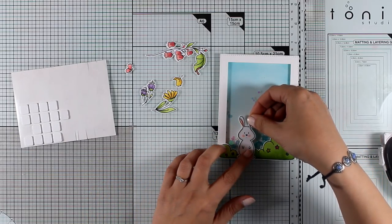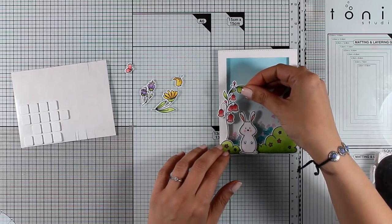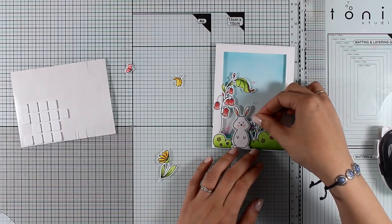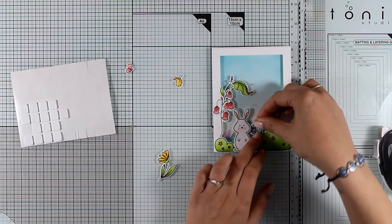I am using some foam squares at the back of the bunny, but for all the rest of the cutouts, I'm going to use tape adhesive at the back.